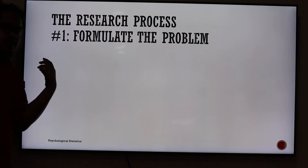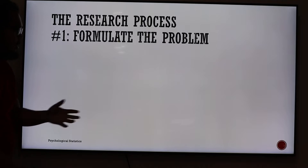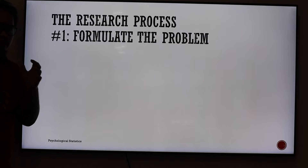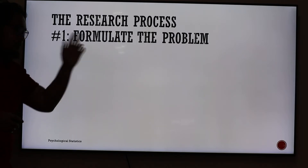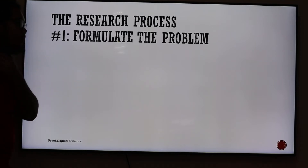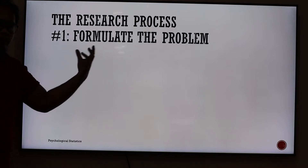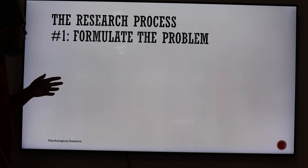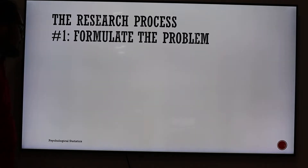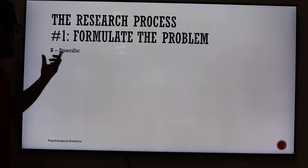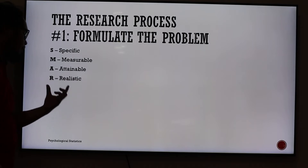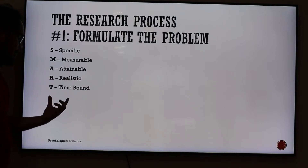In formulating the problem, it's quite important that we adhere to these five principles. In social science research, the statement of the problem is where you can see the specific problem. So when formulating a statement of the problem, the specific objectives should follow this acronym — SMART. S stands for Specific, M stands for Measurable, A should be Attainable, R is Realistic, and T is Time-bound.